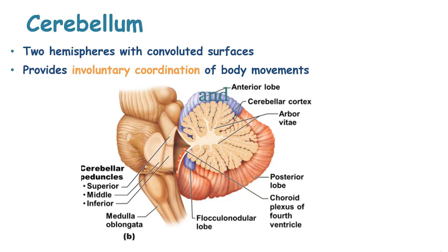The cerebellum also has two hemispheres with convoluted surfaces and provides control and coordination of involuntary body movements. The cerebellum has an anterior lobe, a posterior lobe, and a flocculonodular lobe.